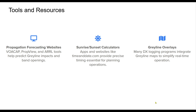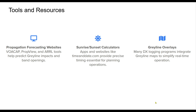Gray line propagation can be efficiently utilized with the help of modern tools and resources. Websites such as VoaCap and PropView offer reliable propagation forecasts. Sunrise and sunset calculators allow you to align your schedules with gray line transitions accurately. Furthermore, DX logging software often integrates gray line overlays, giving real-time insights into optimal conditions. These tools collectively make it simpler to harness the full potential of gray line propagation.